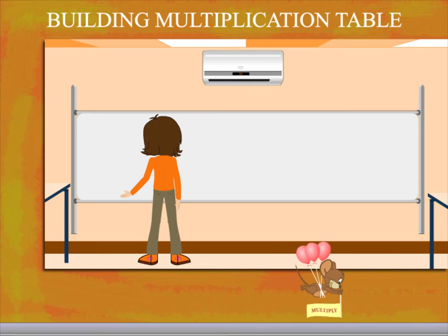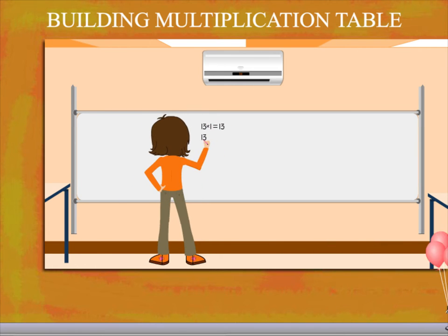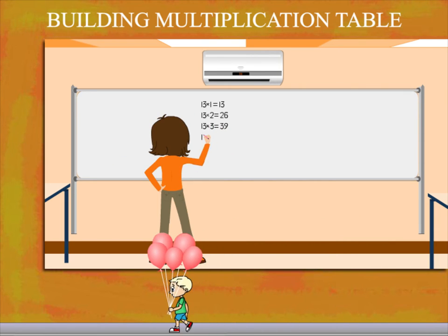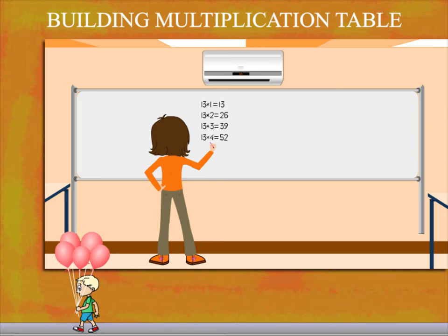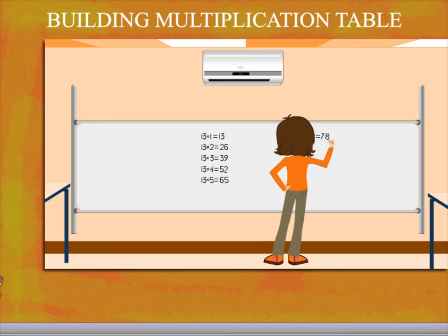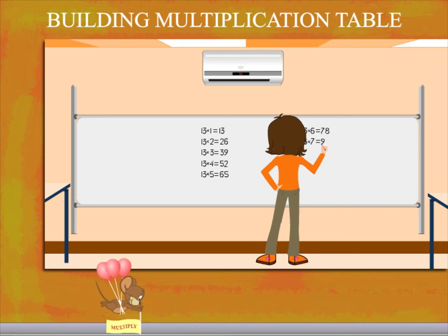Add now the tables of 13. 13 1s are 13, 13 2s are 26, 13 3s are 39, 13 4s are 52, 13 5s are 65, 13 6s are 78, 13 7s are 91,